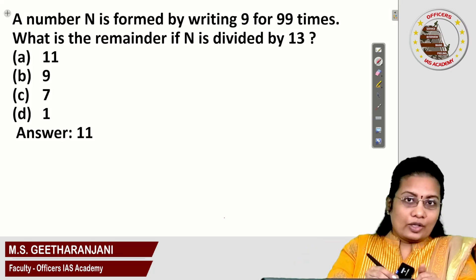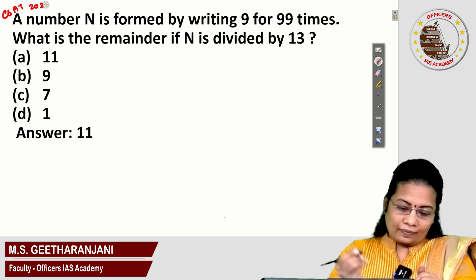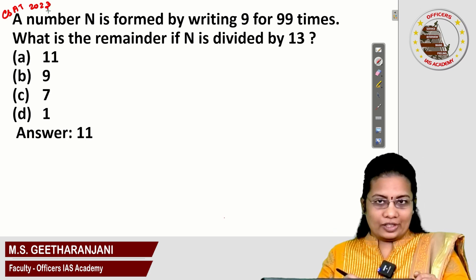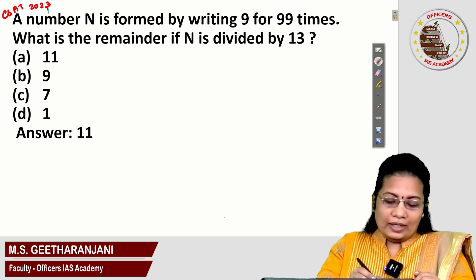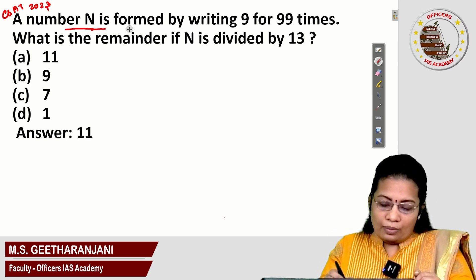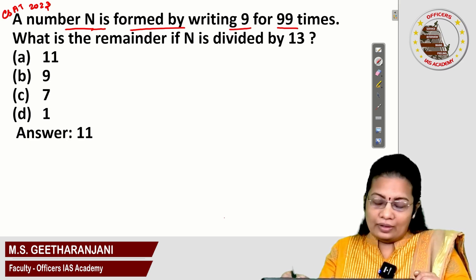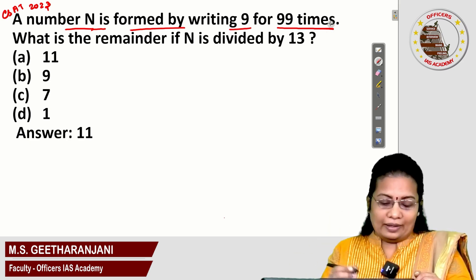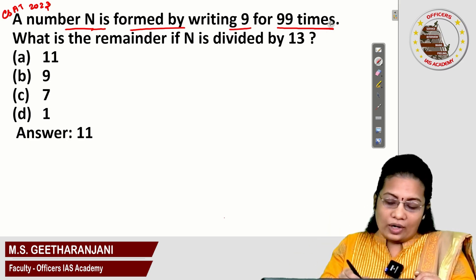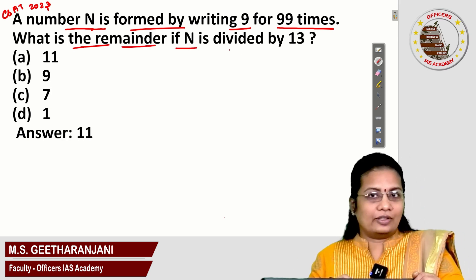Welcome to the CZ series. Today's question is from CZ 2023, a previous year question. A number n is formed by writing the number 9 for 99 times. What is the remainder if n is divided by 13?